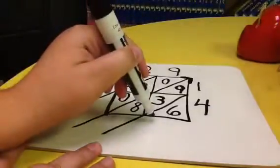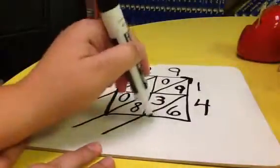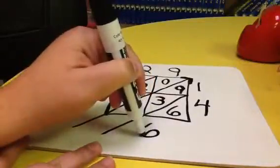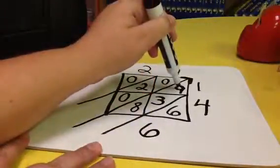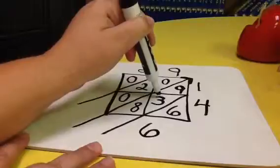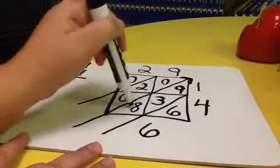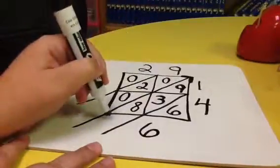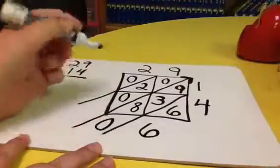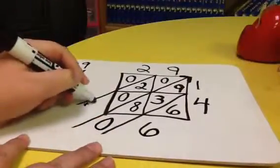In this section we just have 6, so we just bring that down. Then we'll take 9 plus 3 which is 12, plus 8 which is 20. We drop our 0 and we're going to carry our 2 over here into our next column.